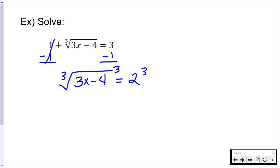What happens is the cube root and the cube cancel each other out. So I'm left with whatever's inside, which in this case is just 3x minus 4. And then cube whatever was on the right hand side, so 2 to the third power is 8.